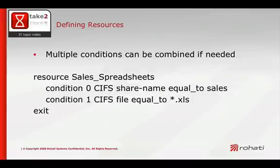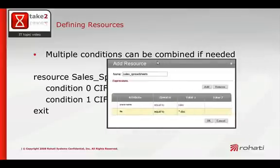Multiple conditions can be combined if needed, but keep in mind that conditions are joined via an AND operator, so for a target to fall into the scope of a given resource, it must meet all of the conditions. Here you see a resource that scopes only to Excel files located under a share named Sales. If you wish to combine conditions with an OR operator to scope to all Excel or Word documents, you would do so with an attribute group, which I will cover in another Take-Two topic.